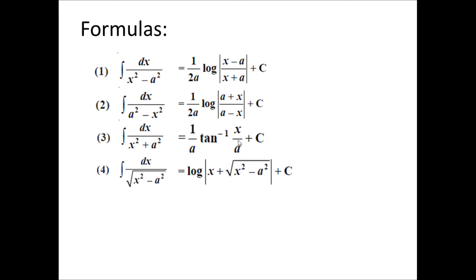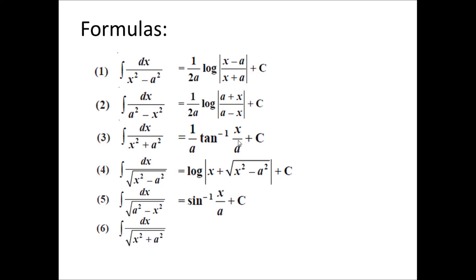The fourth formula is: integral of 1 upon square root of x squared minus a squared equals log of x plus square root of x squared minus a squared plus a constant. The fifth one is: integral of 1 upon square root of x squared plus a squared dx equals log of x plus square root of x squared plus a squared plus a constant of integration. On the basis of these six formulas, let us discuss how to find the integral of these four specific types.